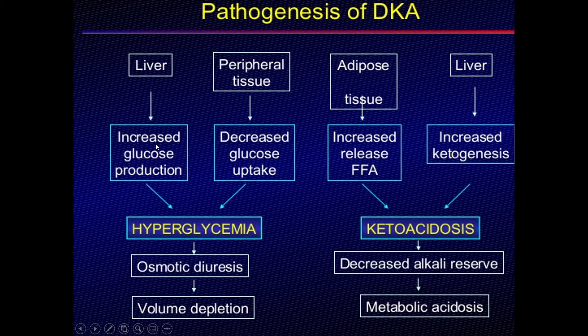In diabetes, gluconeogenesis increases glucose production leading to hyperglycemia. On the other side, peripheral tissue does not utilize glucose — this also contributes to hyperglycemia. This extra glucose acts as an osmotic diuretic, leading to high osmotic diuresis, which is a cardinal symptom of diabetes: polyuria — excessive urine formation. To compensate for that water loss, the patient drinks water again and again — that is polydipsia.